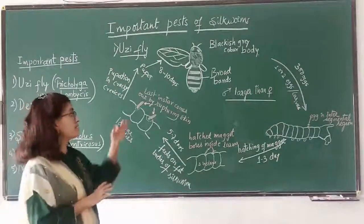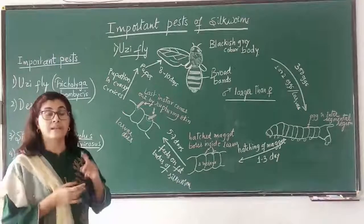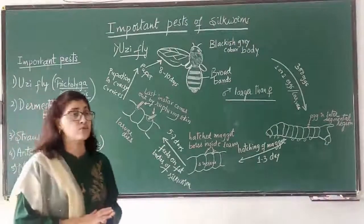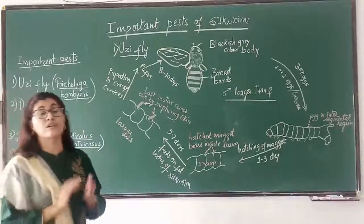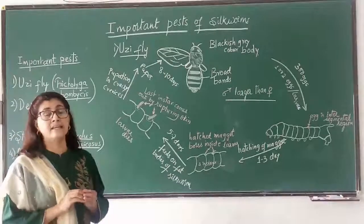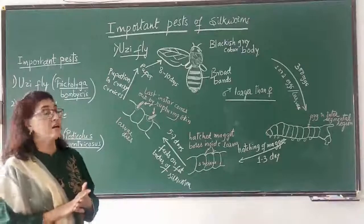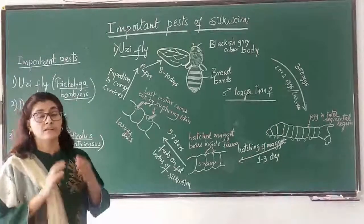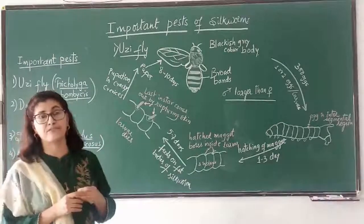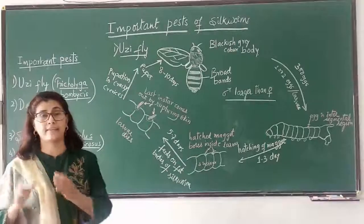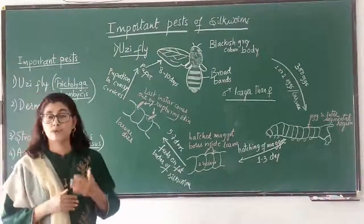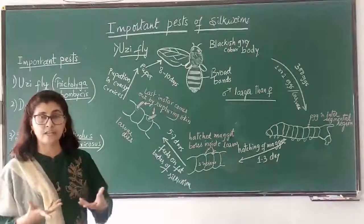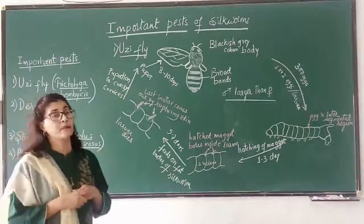So oozyfly is destructive to both silkworm larvae and cocoons. Control measures include covering all doors, windows, and ventilators with fly-proof mesh. The rearing room has to be fumigated. Mulberry leaves harvested from the field must be kept outside the veranda and observed for oozyfly. Only once you confirm there are no flies should you give those leaves to the larvae.